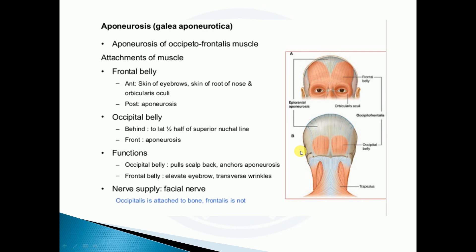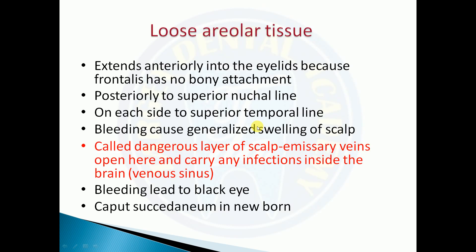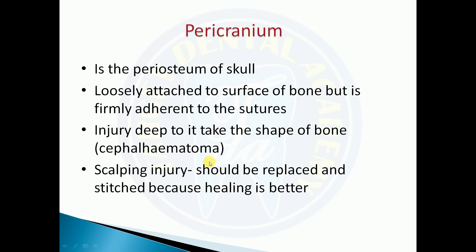The function of the aponeurosis: the occipital belly pulls the scalp back and anchors the aponeurosis, while the frontal belly elevates the eyebrows and causes transverse wrinkles in the forehead. The nerve supply is the facial nerve. The loose areolar tissue is also called the dangerous area of the scalp because the emissary veins open here and carry infection to the brain.